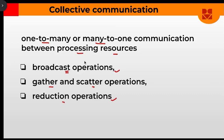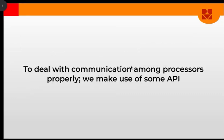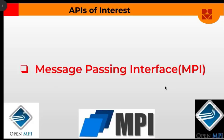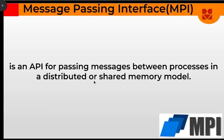To perform communication among processes properly, we use APIs — Application Program Interfaces. These are not full applications but can be incorporated into your code. The API of interest here is the Message Passing Interface, MPI. In a previous video, we mentioned that MPI is used to communicate between multiple processes, while OpenMP is used for multi-threading within a process.